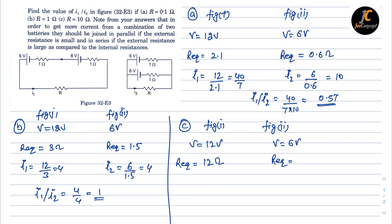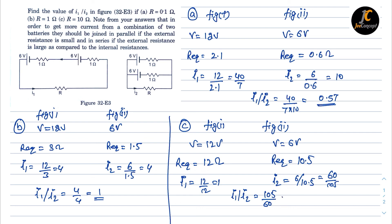For figure 2, the equivalent resistance is 10 plus 0.5, which equals 10.5 ohms. i1 equals 12 by 12, which is 1, and i2 equals 6 upon 10.5, which simplifies to 60 upon 105. The ratio i1 by i2 is therefore 105 divided by 60, or 1.75. This is the solution for part c.